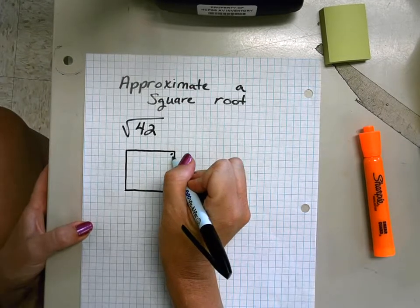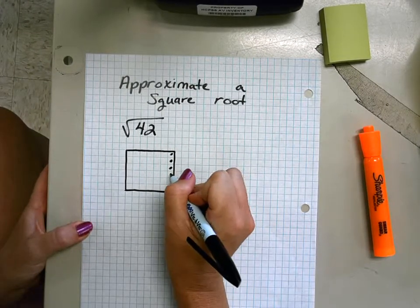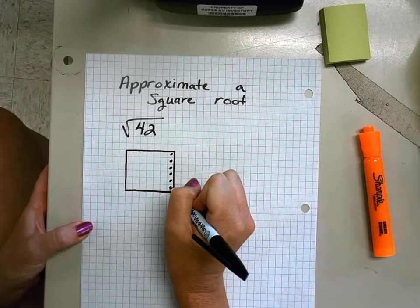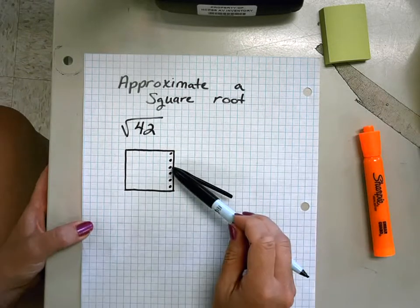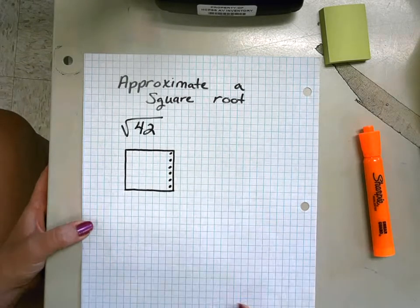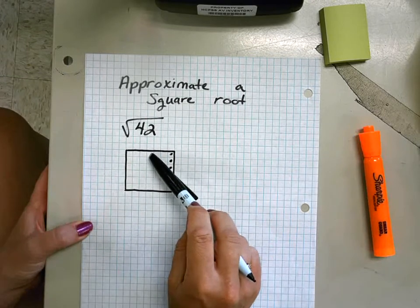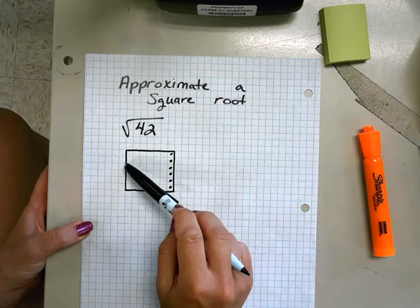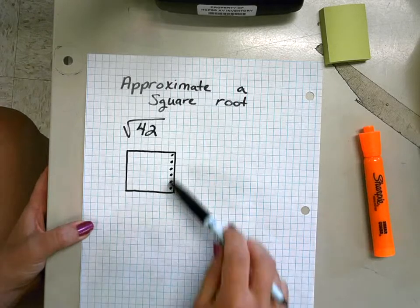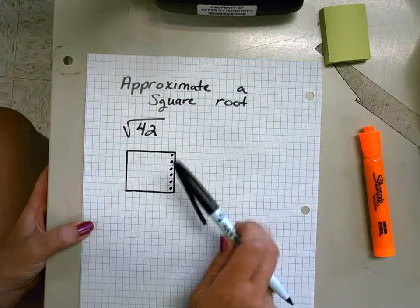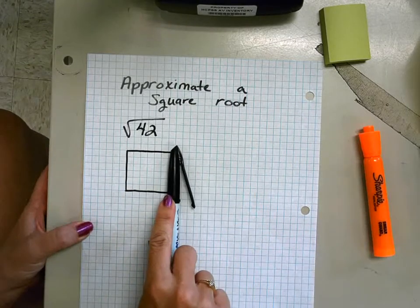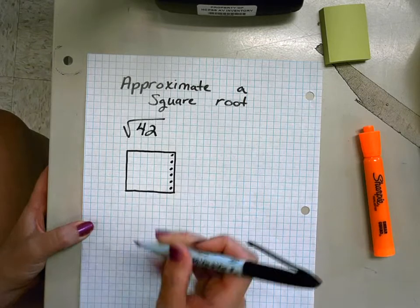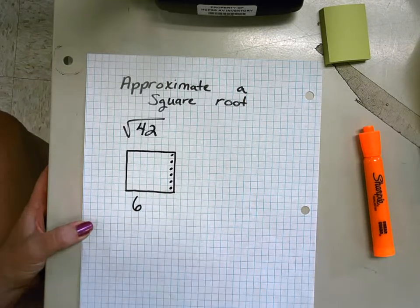So I'm going to go ahead and just take off this last block here. I'm going to use my color to kind of take away those six, and I'm left with six going across, six going down. That right there is our block of 36. The square root of 36 is 6, so I know that's going to be my whole number.